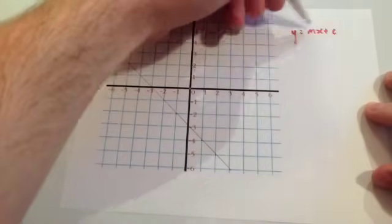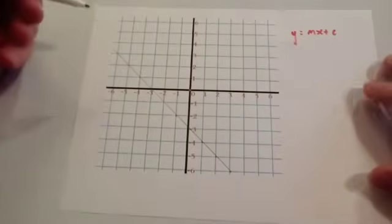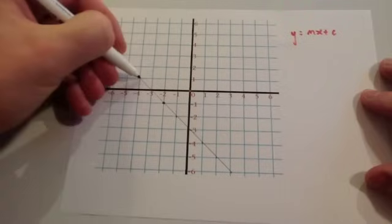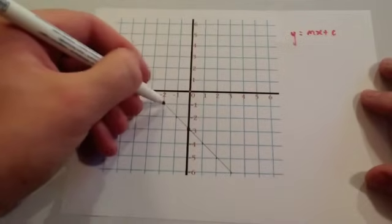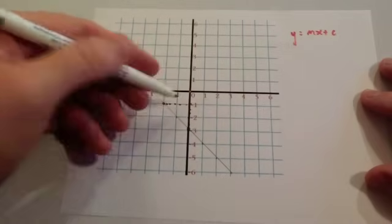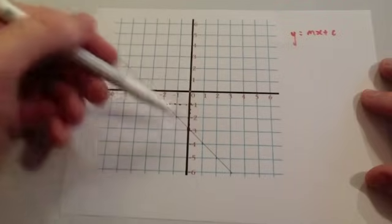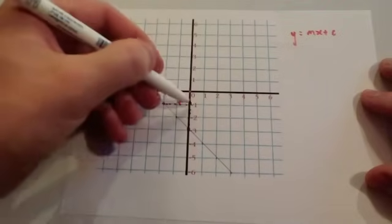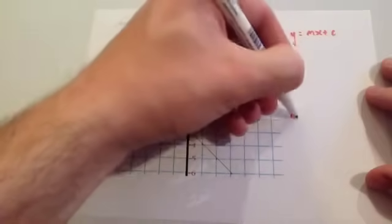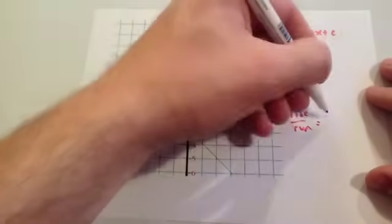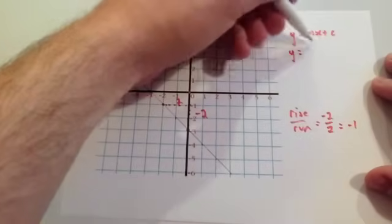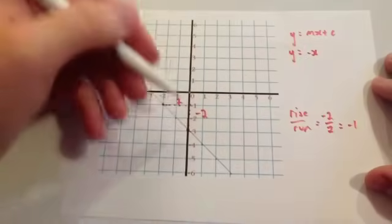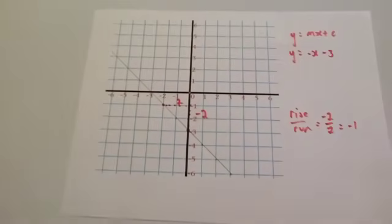Finally, we're going to find the equation of this line. It's y equals mx plus c, where m is the gradient and c is the y-intercept. Let's find our gradient by choosing two points and turning it into a right-angle triangle. Because this line is going down, the rise is going to be negative. The run is 2, and the rise — because it goes down 1, 2 — the rise is minus 2. So rise over run equals minus 2 divided by 2, which equals minus 1. So it's y equals minus x — rather than writing minus 1x — and it crosses at minus 3, so it's y equals minus x minus 3.